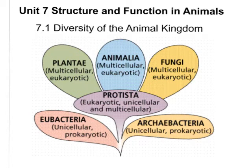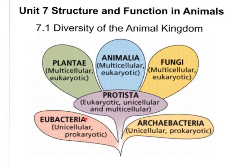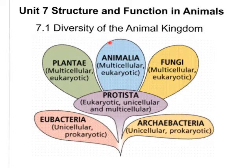Hello, everyone, and welcome to our new unit. Unit 7 is about the structure and function in animals, and we're beginning this unit with a look at the diversity in the animal kingdom. If you'll remember, when we looked at all of the kingdoms — here is a representation of the six kingdoms — we have eukaryotic kingdoms: plants, animals, fungi, and protists, and we have the prokaryotic kingdoms: eubacteria and archibacteria. All life is represented here in classification, and we're going to focus in on one particular kingdom — the animal kingdom.